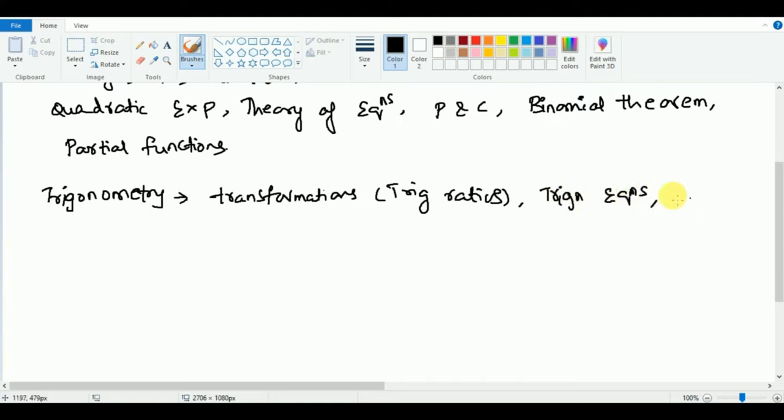Coming to vector algebra, you have to cover addition and product of vectors - very, very important. The next chapter is probability. Under probability, you have to cover measures of dispersion, probability, random experiments and events, random variables, and probability distributions.